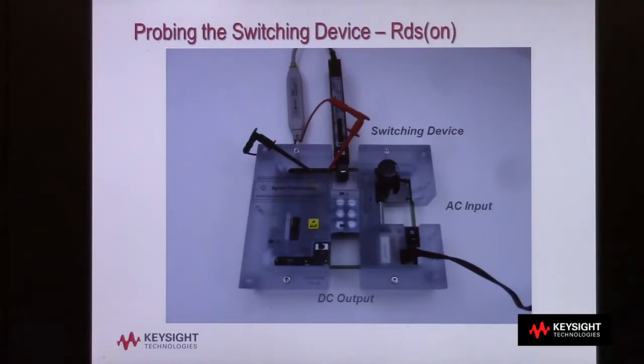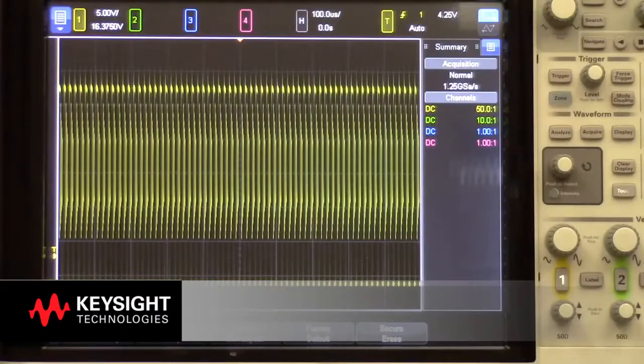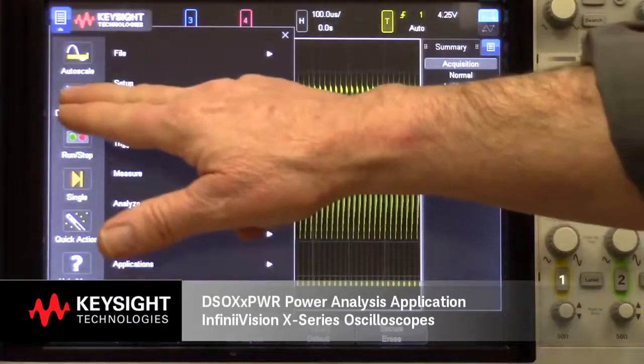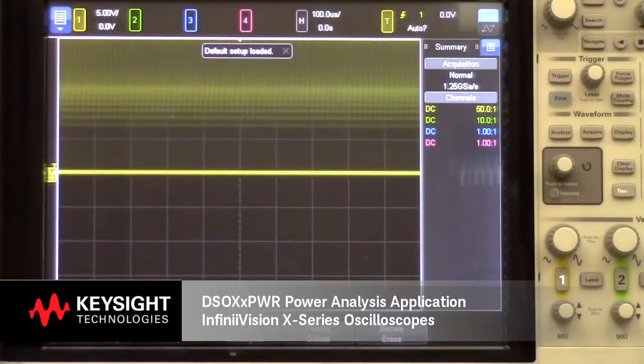But when making current measurements on your DUT, however, you'll typically need to create your own wire current loops. Let's start making measurements. I'll begin with a default setup so that we can set everything up from scratch.